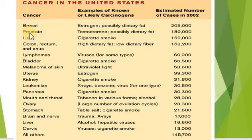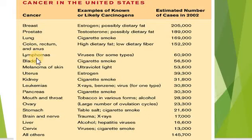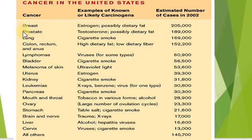The given slide shows cancers in the United States. Among them, the most common types are breast cancer, prostate cancer, lung cancer, colon cancer, lymphomas, and melanomas. These are the most common types of cancers. Our focus is primarily on these cancers.